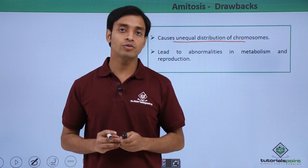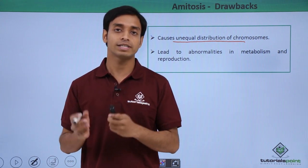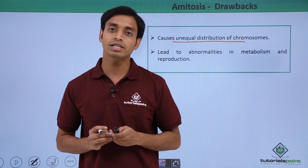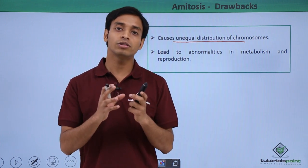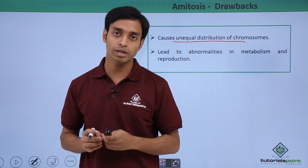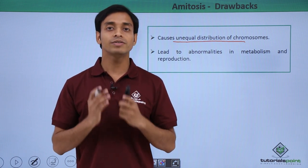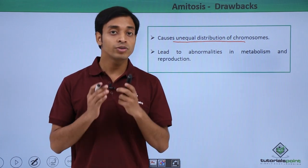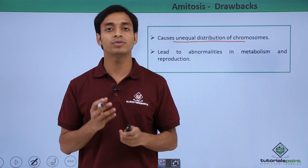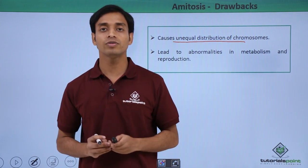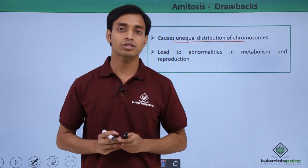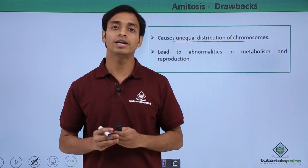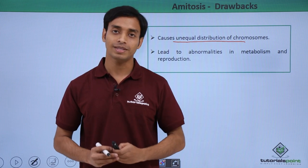In this video we have talked about the process of cell division known as amitosis — how it is different from other types because it does not involve the dissolving of the nuclear membrane. We have seen the mechanism of amitosis, the cells which can perform it, and also discussed some of the drawbacks of the process. I hope you have understood and liked this video. Thank you.